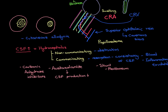The Monroe-Kellie Doctrine is a fancy name for a principle that is actually extremely simple. That principle is that inside the skull there are three major substances: cerebrospinal fluid, brain tissue, and blood. If we're going to raise the intracranial pressure — the pressure inside the skull — we need to raise the amount of at least one of those substances in order to produce that increase in intracranial pressure.